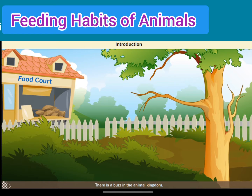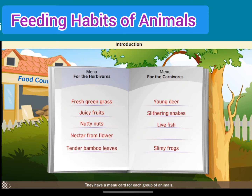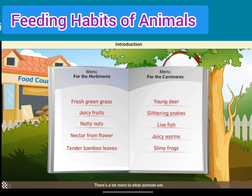Animals. There is a buzz in the animal kingdom. Humans have opened a food court for animals. They have a menu card for each group of animals. Read the menu card shown on your screen. Looks interesting, doesn't it? There is a lot more to what animals eat. In fact, we can group animals based on the food they eat. We are going to learn all about this now.